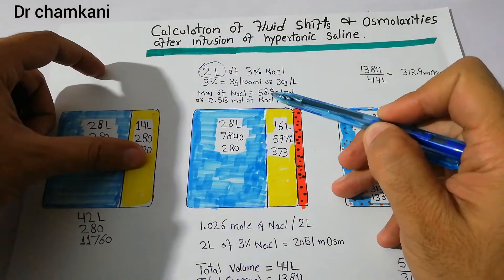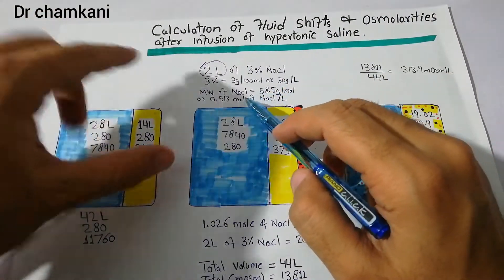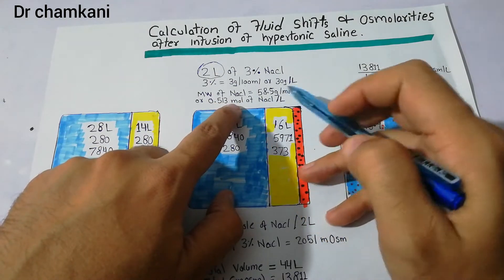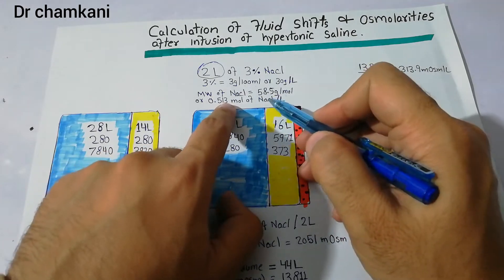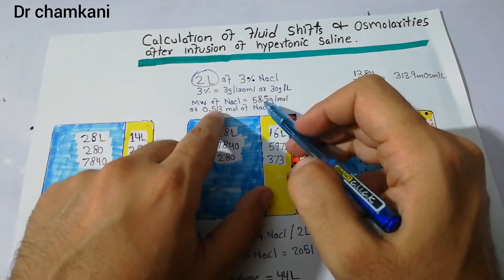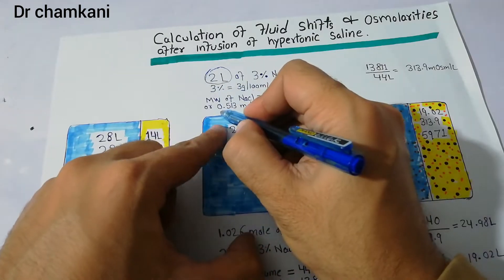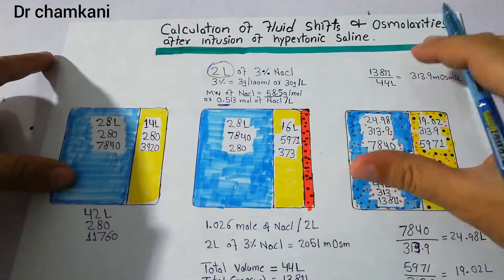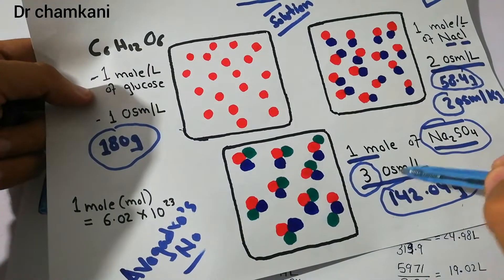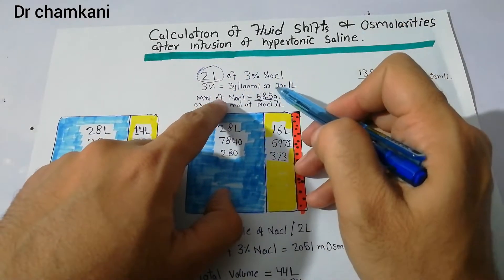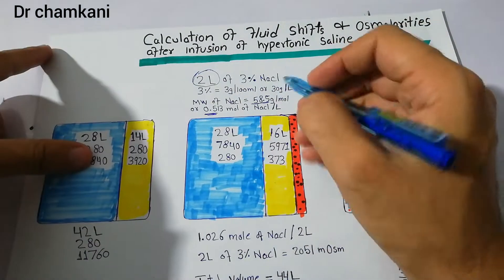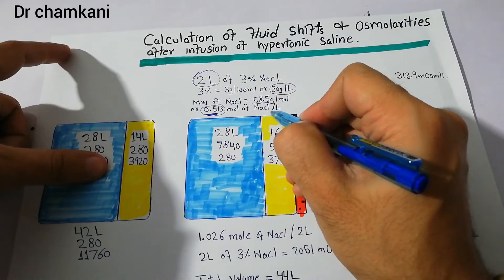Since the molecular weight of NaCl is 58.5 g/mol, and we have 30 grams per liter in a 3% solution, that equals 0.513 moles of NaCl per liter. For 2 liters, we have 0.513 × 2 = 1.026 moles of NaCl. Because each NaCl molecule dissociates into 2 particles, we multiply by 2, then by 1000 to convert osmoles to milliosmoles.